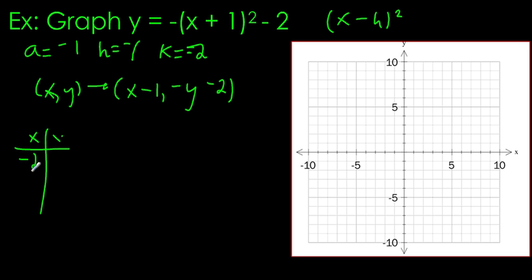We'll write our base table. It stays the same for every single quadratic. Negative 2, negative 1, 0, 1, 2. And then 4, 1, 0, 1, 4.